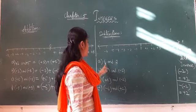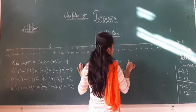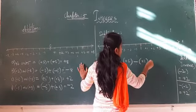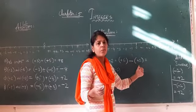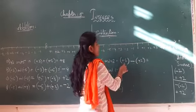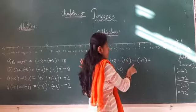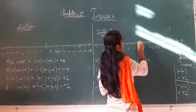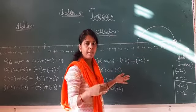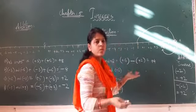Now we will see the subtraction examples. First example: 6 and 2 — that is plus 6 minus bracket plus 2. On the number line, from 0 to plus 6, then you subtract 2, meaning you come back 2 steps. From 6: step 1, step 2 — that is plus 4. As you know, 6 minus 2 is 4. The answer is plus 4.